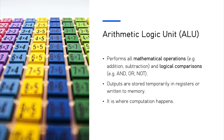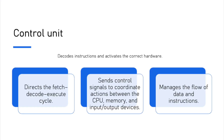Each of these can get you points in the exam, so make sure you are aware of them. The control unit is the other core component — it decodes instructions and activates the correct hardware by sending control signals. It directs the fetch-decode-execute cycle, and it sends control signals to coordinate actions between the CPU, memory, and the input and output devices. Basically it manages the flow of data and instructions inside a particular device.